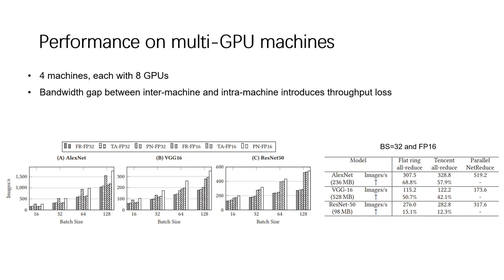For performance on multi-GPU machines, all solutions show throughput loss due to the bandwidth gap between inter-machine and intra-machine links. However, NetReduce shows less degradation, as its parallel method is GPU-balanced and the INA acceleration compensates for the loss.